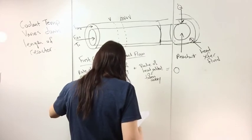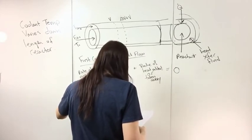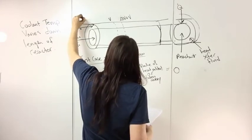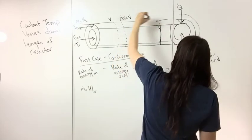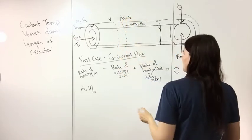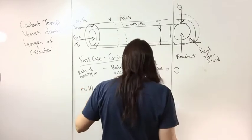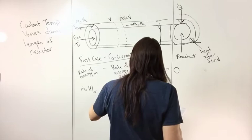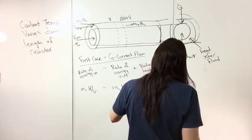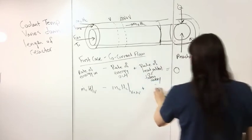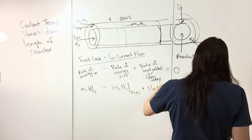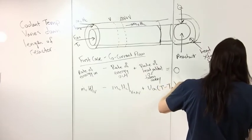The rate of energy in would be mc multiplied by the enthalpy hc at this volume. Coming out, this is minus mass flow rate multiplied by the enthalpy at V plus delta V. Then there's the Q which is the rate of heat added or taken away, and that was UA(T - Ta) multiplied by delta V, and this is equal to zero.